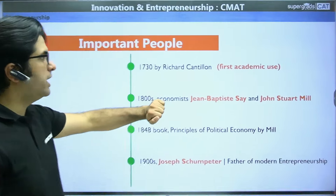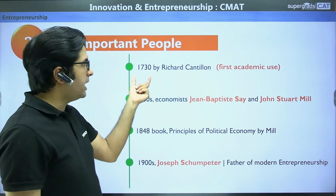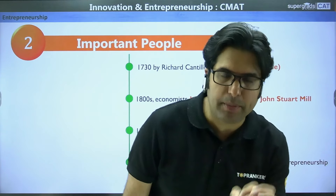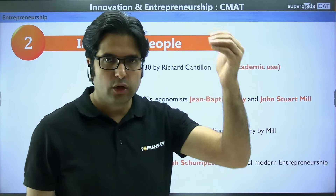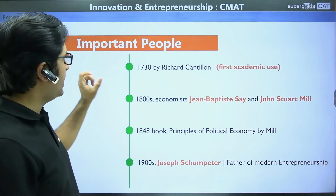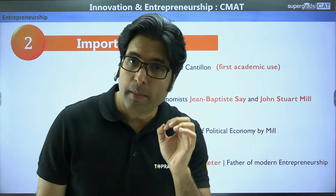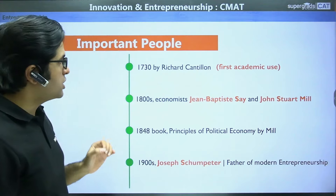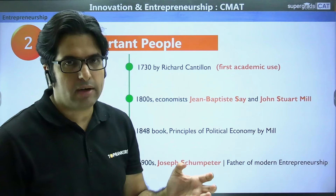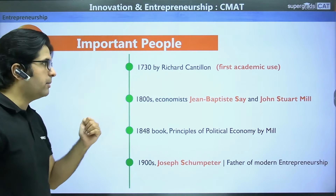Now let's look at the important people associated with the term entrepreneurship. In 1730, Richard Cantillon was an economist who made the first academic use of the term. The original French term is very old, but the first academic reference to entrepreneurship comes from 1730. Remember this name — Richard Cantillon was a famous economist who used it in the sense that we understand today.